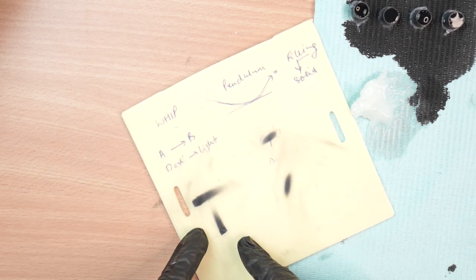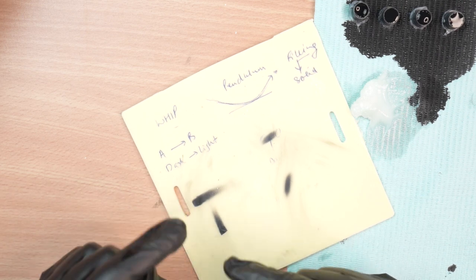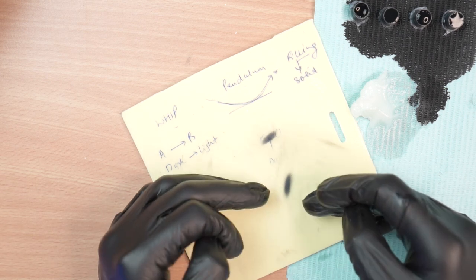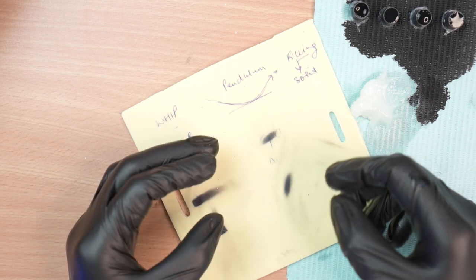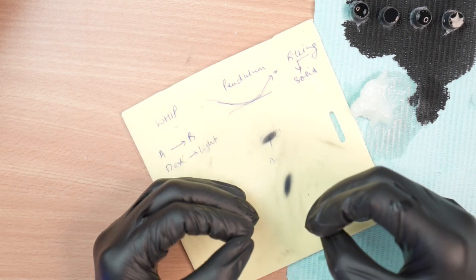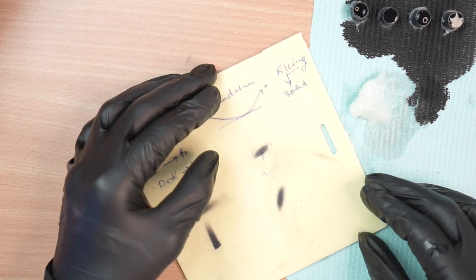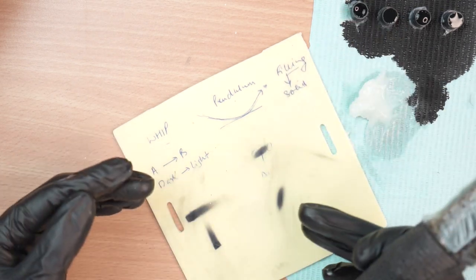Now you see, the difference between whip shading and pendulum shading is that in whip, I do one stroke. But in pendulum, I make a very soft layer.